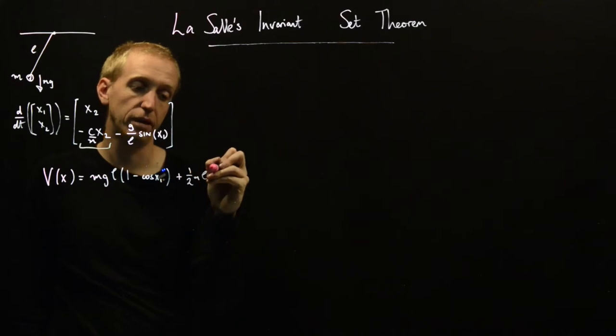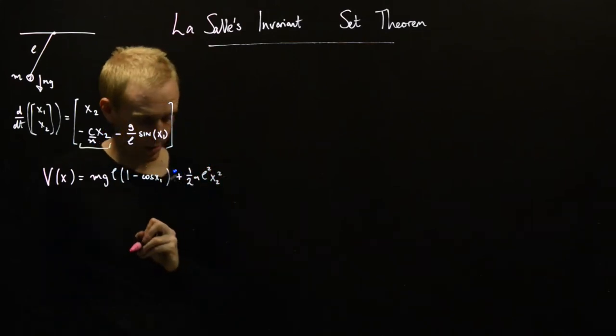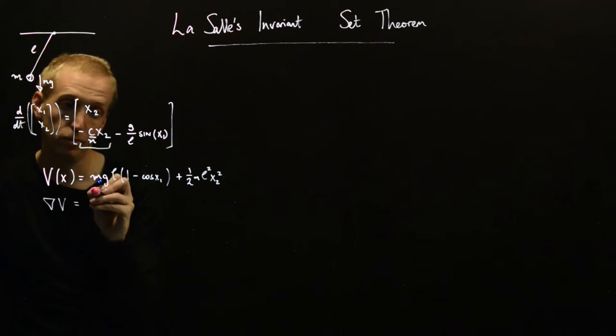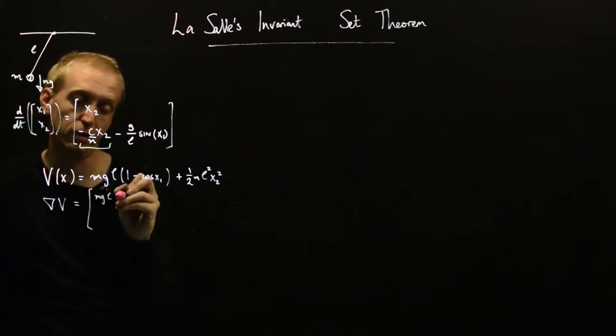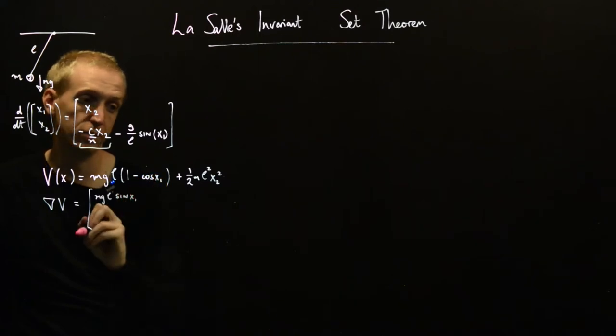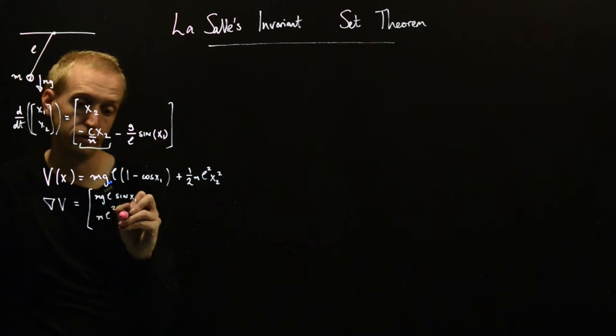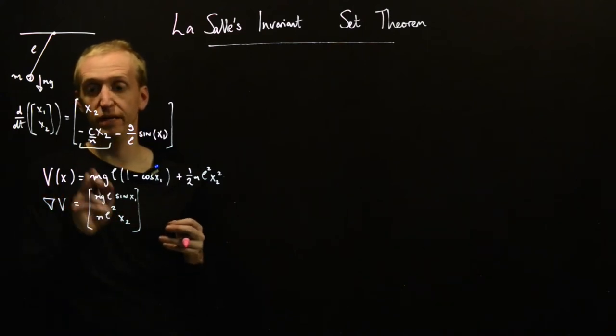Which was a half M L squared x2 squared. And we saw before that the gradient of V was just equal to MgL sin x1 and M L squared x2.